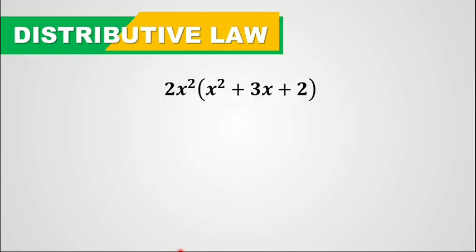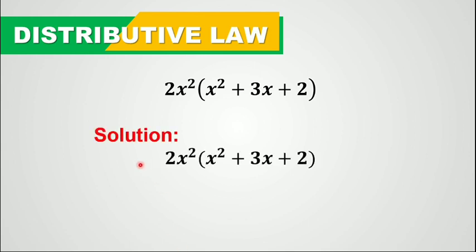So 2x squared times the quantity of x squared plus 3x plus 2. Again, all you have to do is distribute this term to each of these terms by multiplying this to every term. So 2x squared times x squared is 2x to the power of 4. And 2x squared times positive 3x is 6x cubed.